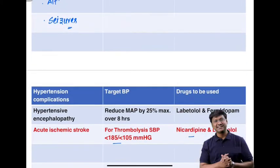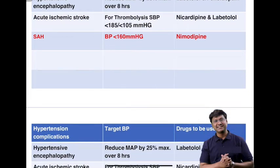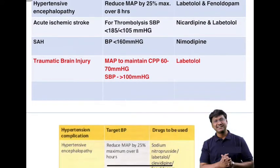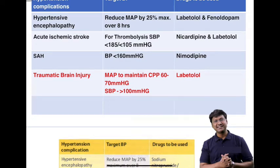Next, consider subarachnoid hemorrhage. If the individual develops subarachnoid hemorrhage, the target blood pressure should be less than 160 mmHg systolic, for which you need to give nimodipine. Another hypertensive hemorrhagic complication is traumatic brain injury.